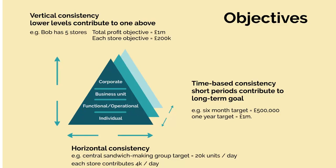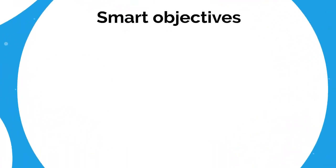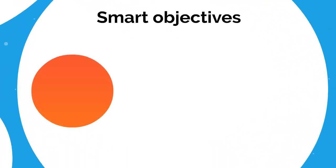So that's objectives. How can we tell if the objectives we've set are going to be effective? Well, effective objectives are always SMART. They are Specific — don't make me guess what you need, tell me precisely, give a clear focus topic such as profit, sales or customer satisfaction.